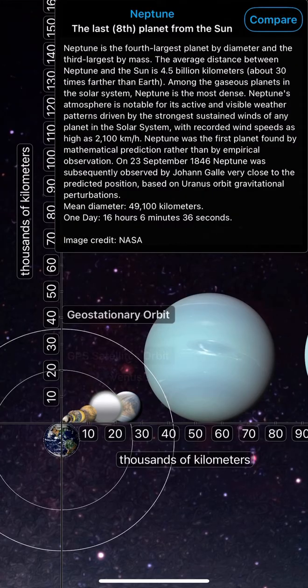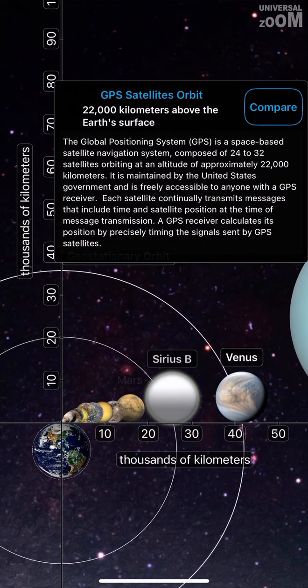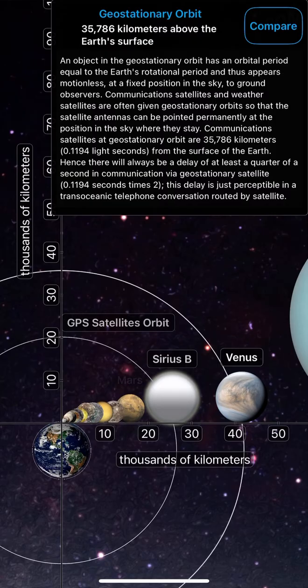Neptune, the last, eighth planet from the Sun. Uranus, the seventh planet from the Sun. GPS satellites orbit 22,000 km above the Earth's surface. Geostationary orbit 35,786 km above the Earth's surface.